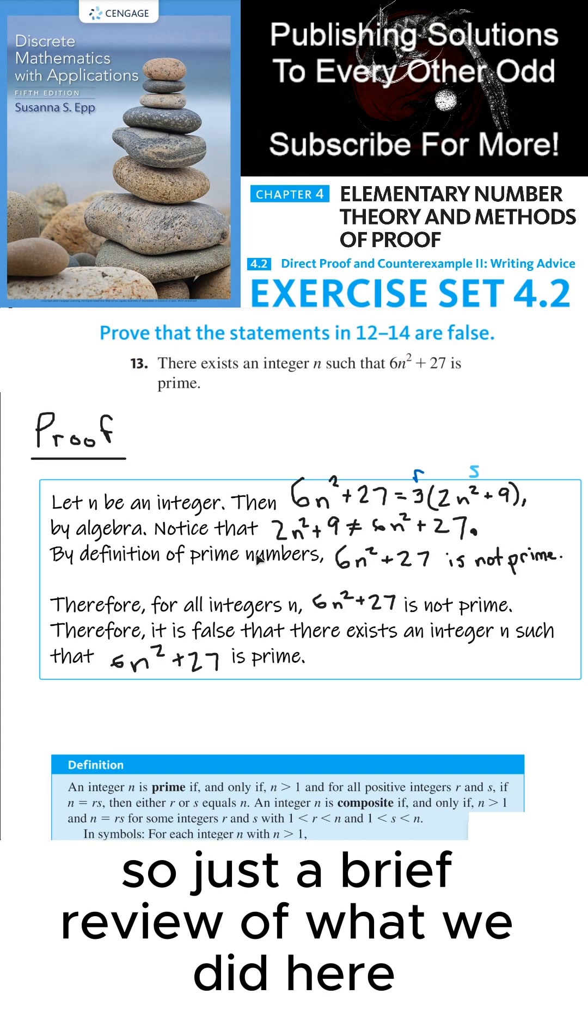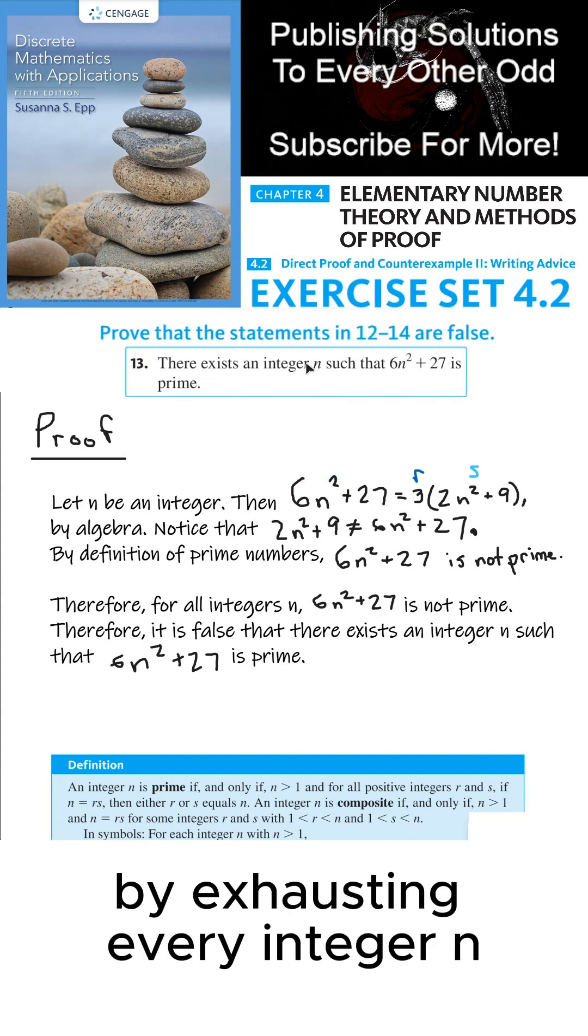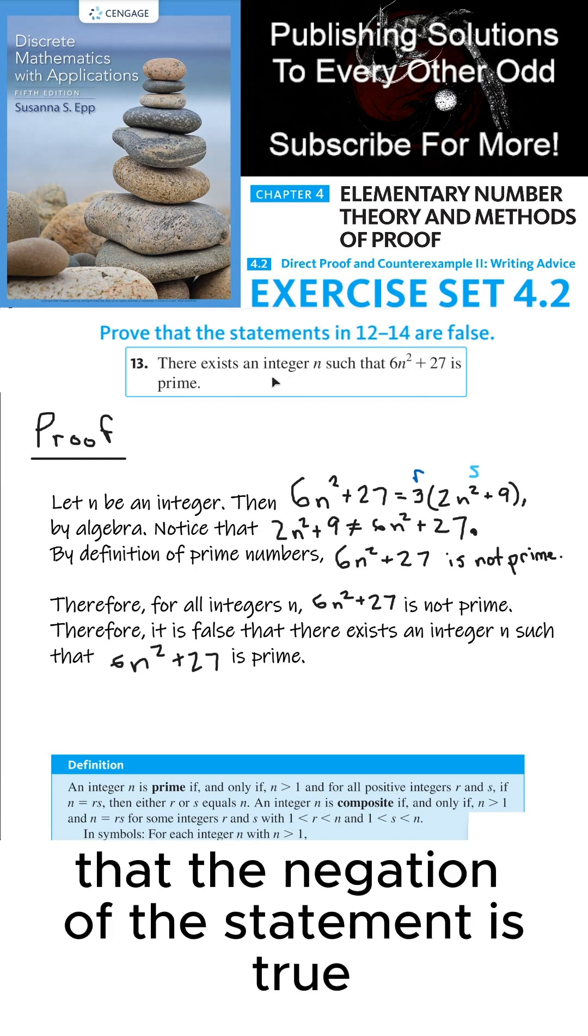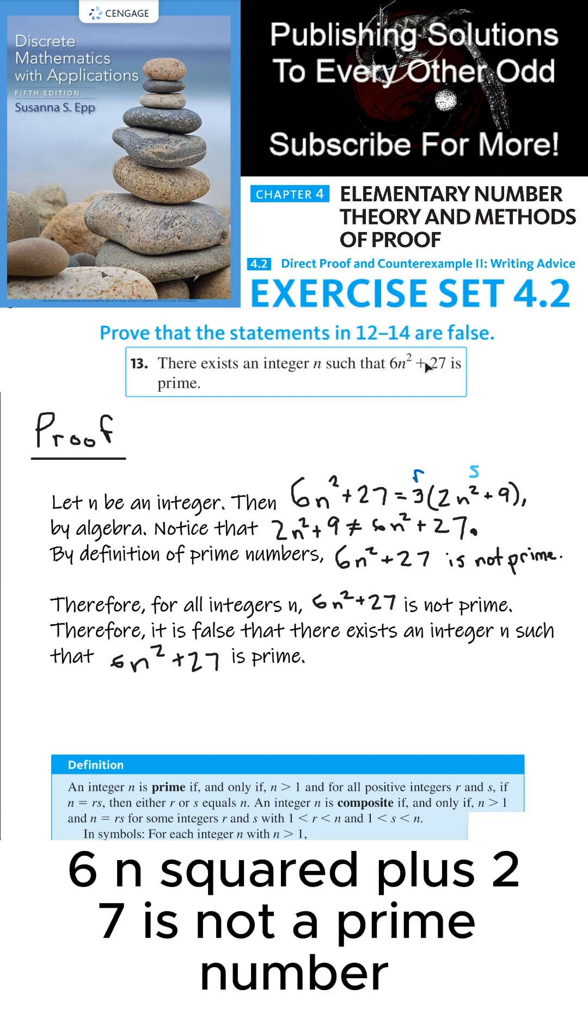So just a brief review of what we did here, instead of proving that this statement is false by exhausting every integer n, we instead proved that the negation of the statement is true. That for all integers n, 6n squared plus 27 is not a prime number.